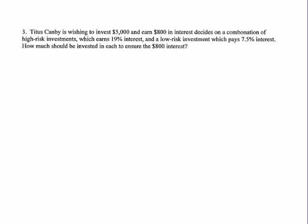So what we want to do is first define our variables. We need to define our variables before we can go anywhere else and I've said this before, the variables are hidden in the question. So, the question says how much should be invested in each to ensure the $800 of interest? Well, each what,